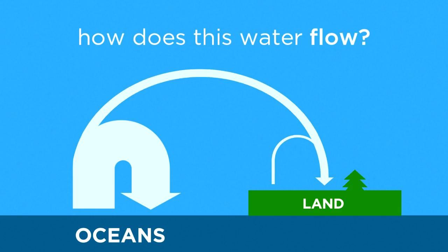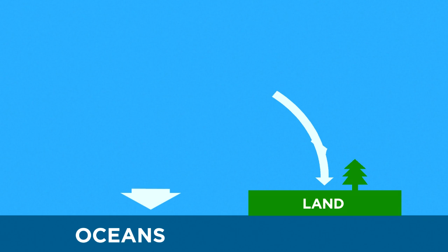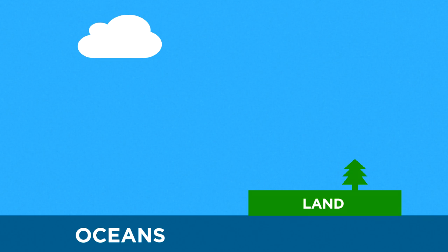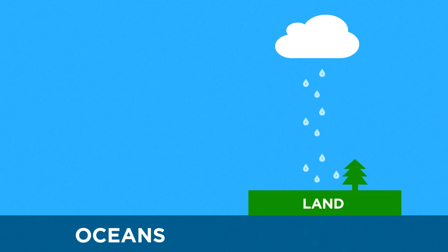Another 11,000 cubic kilometers evaporates from the land and precipitates back down. But plant life does even more, placing 62,000 cubic kilometers back into the atmosphere, which precipitates over land again. In other words, 90% of the water evaporated from the ocean never makes it to land. But once on land, the water is likely to evaporate or transpire, and return to the land again as additional precipitation.